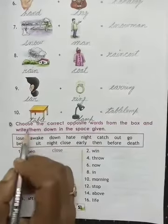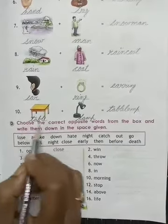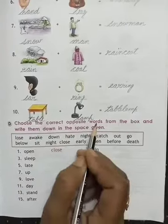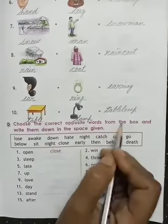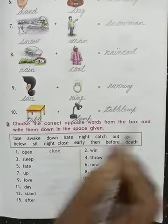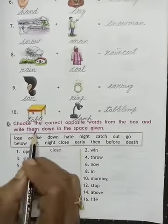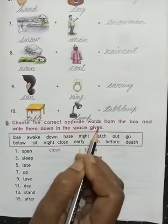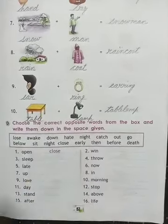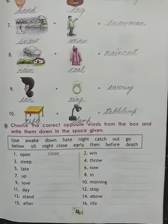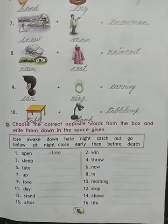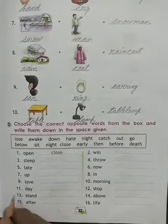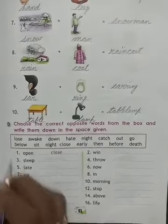Now come to the next. Choose the correct opposite words from the box and write them down in the space given. Children, we have already done some opposites before, and today we shall do some more.